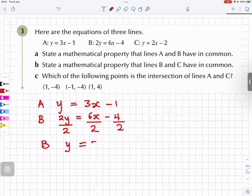Yeah, so y equals 3x minus 2. And for C, minus 2y equals 2x, oh that's minus 2. So the ones with the same gradient...